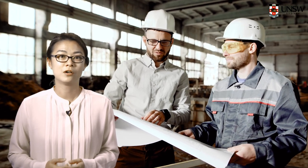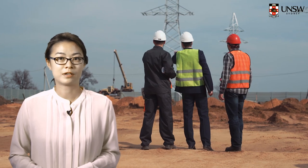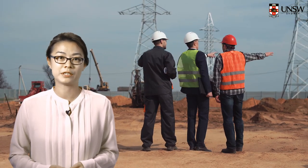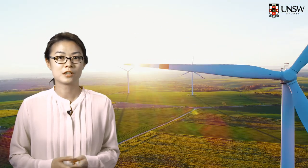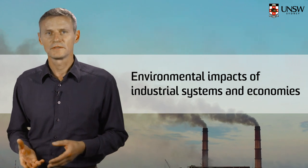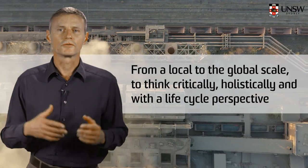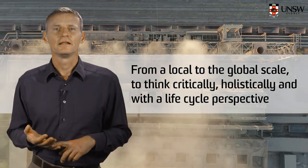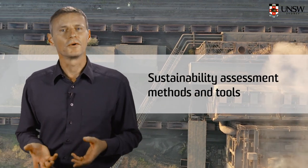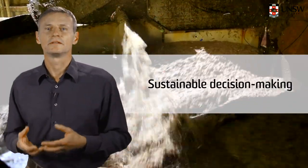More than ever, engineers need to find holistic and effective solutions to currently unsustainable practices of production and consumption. Engineers need to help protect the natural environment and meet the social and economic needs of a growing human population at the same time. This course will introduce you to the concepts and methods of sustainable engineering and industrial ecology and their application in work practice and research. You will learn how to analyse and assess the environmental impacts of industrial systems and economies. We aim to equip you with the ability to understand challenges of sustainability from a local to global scale, to think critically, holistically and with a life cycle perspective. You will also learn how to apply sustainability assessment methods and tools in real world examples. Ultimately, after the course, we want you to be able to make recommendations towards more sustainable decision making.